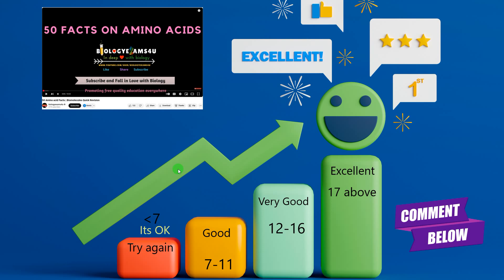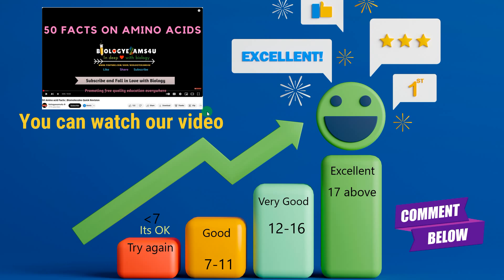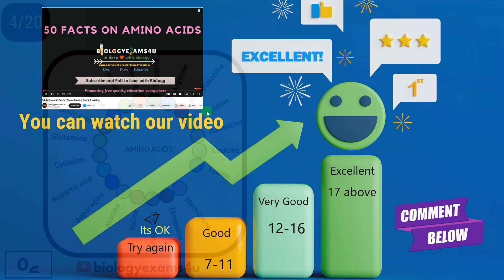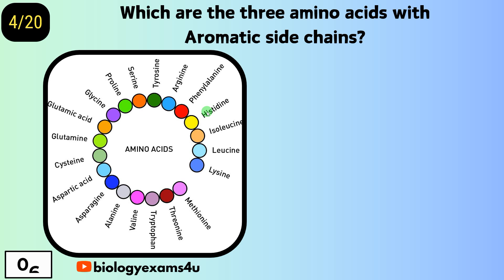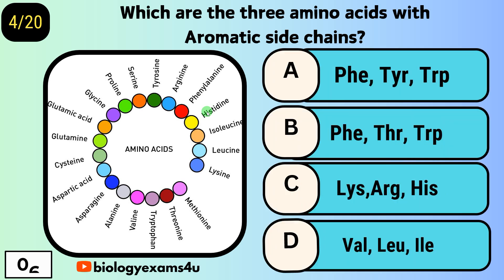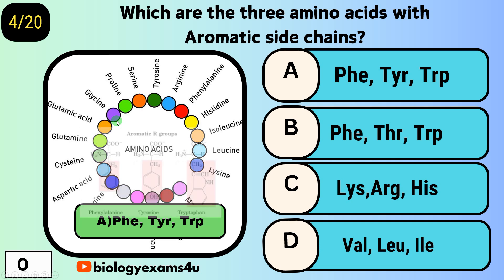This is your scorecard. You can watch our video on 50 facts on amino acids before attempting this quiz, or let us move to the next question. Which are the three amino acids with aromatic side chains? Option A, phenylalanine, tyrosine, tryptophan; option B, phenylalanine, threonine, tryptophan; option C, lysine, arginine, histidine. The answer is option A: phenylalanine, tyrosine, and tryptophan.